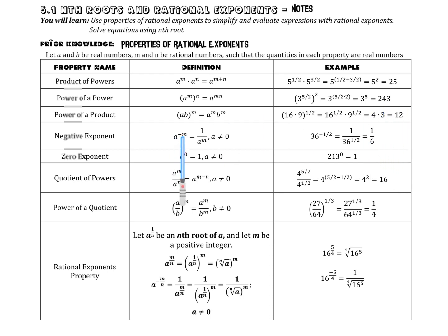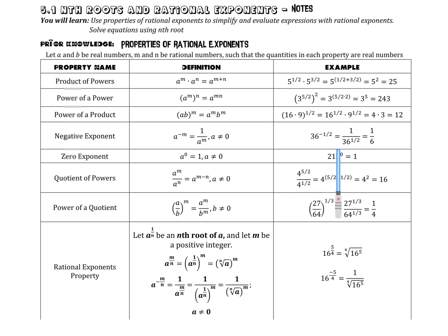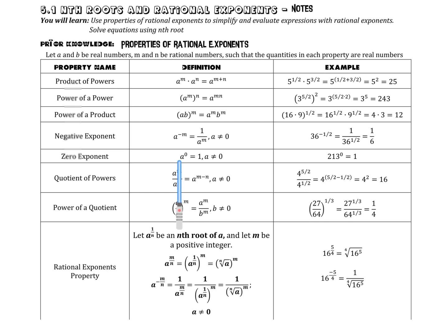If we have something to a negative exponent, we can take the reciprocal, as long as the base is not equal to 0. So 36 to the negative 1/2 power is the same as 1 over 36 to the 1/2, which is 1 over the square root of 36, giving us 1/6. If we have anything to the power of 0, that equals 1, as long as the base isn't 0. For example, 213 to the power of 0 and negative 50 to the power of 0 are both 1.